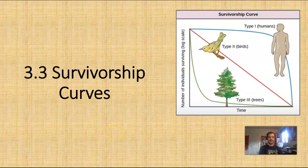Hello, environmental science. This is Mr. S and today we're talking about survivorship curves. These are the three different types of survivorship curve that we'll be talking about: Type 1, Type 2, and Type 3.